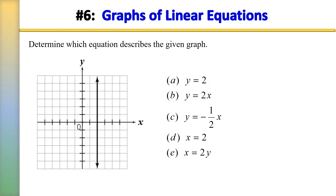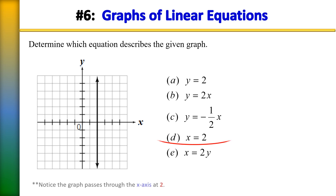Number 6: determine which equation describes the given graph. The correct answer is choice A. The graph of x equals 2 is a vertical line parallel to the y-axis that passes through the x-axis at 2.